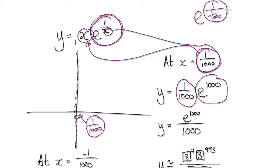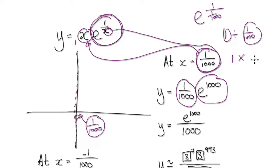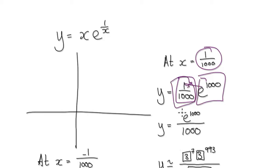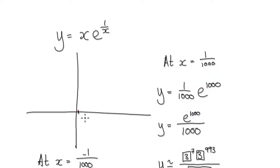Now let's tidy this up. One divided by one over one thousand is the same as keeping this the same and multiplying by the reciprocal, which is one thousand over one — which turns out to be one thousand. So at x equals one over one thousand, the y-value would be this fraction times e to the power of one thousand.